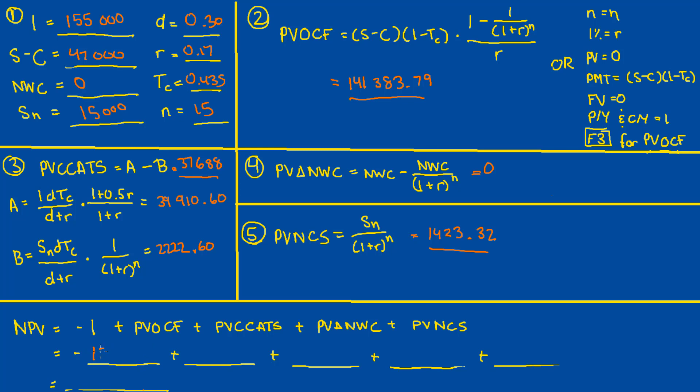And for PV∆NWC, we should have zero because it's not mentioned in the problem, so we just assume it's zero, and we move on to the final step where we should get $1,423.32 for the present value of net capital salvage. And again, we add those values in, so $155,000 for our negative I. PVOCF is $141,383.79. PVCCATS is $37,688, and our PV∆NWC is zero, and our PVNCS is $1,423.32. And adding those all up, we should get an NPV of positive $25,495.11. And so since it's positive, we accept the project.